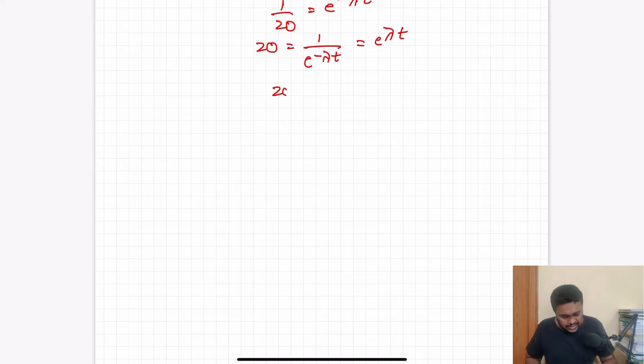Cross-multiply, 20 is equal to 1 by e power minus lambda t, which can be written as e power lambda t. So 20 is equal to e power lambda t.